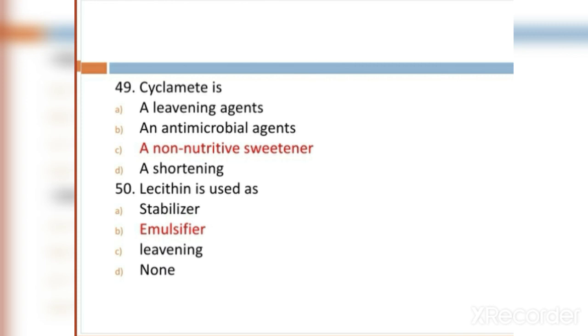MCQ 50: Lecithin is used as: Option A: stabilizer. Option B: emulsifier. Option C: leavening agent. Option D: none. Option B, emulsifier, is the right answer.